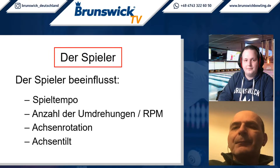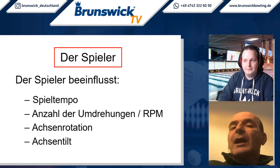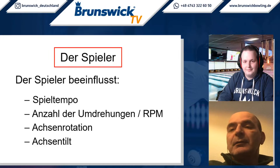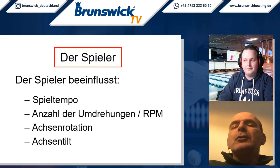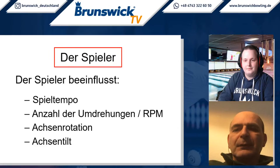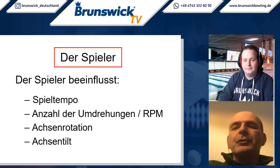Genauso ist es mit der Anzahl der Umdrehungen – ob ein Spieler 200 Umdrehungen pro Minute generieren kann oder 600, das macht einen Riesenunterschied im Balllauf. Dann hast du die Achsenrotation – das heißt, wie die Hand im Boden des Schwungs den Ball loslässt und wo diese Achse hinzeigt, ob die als Rechtshänder links an die Wand zeigt oder ob die zu dir zeigt. Das macht einen Unterschied im Lauf. Und der Achsentilt – der Achsentilt ist eigentlich nur die Größe des Laufrings. Je größer der Laufring ist, umso größer ist die Strecke, die der Ball für eine Umdrehung zurücklegt.